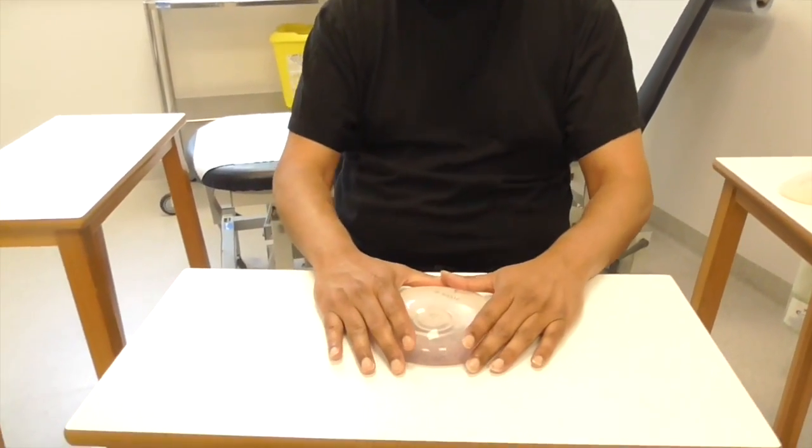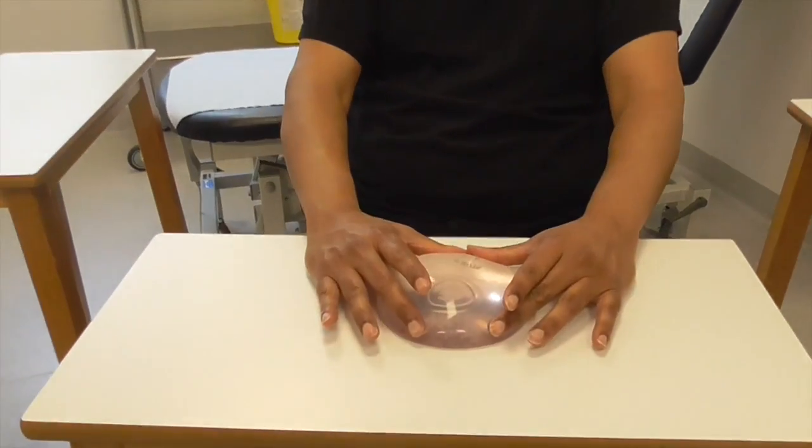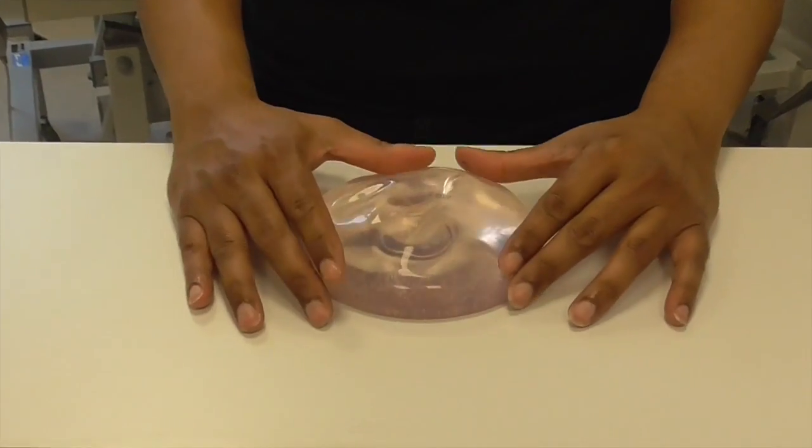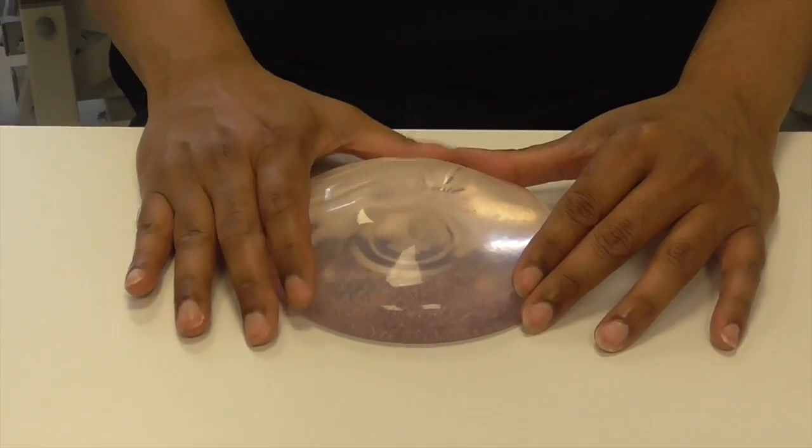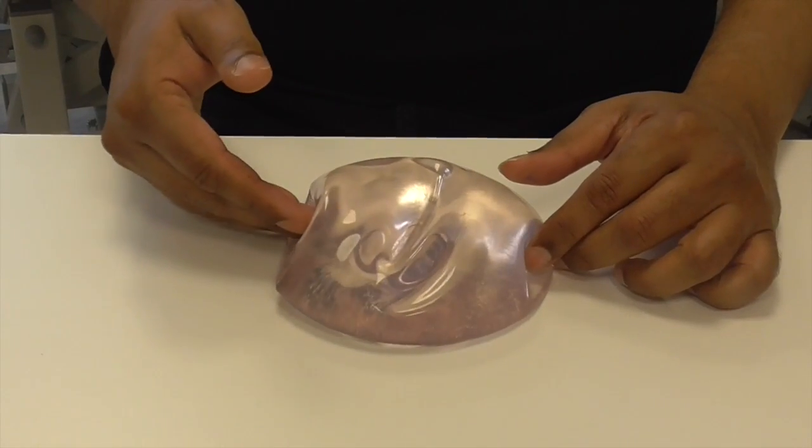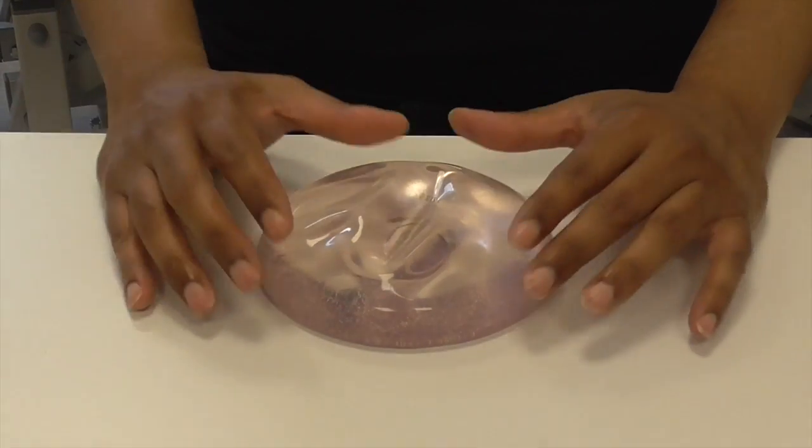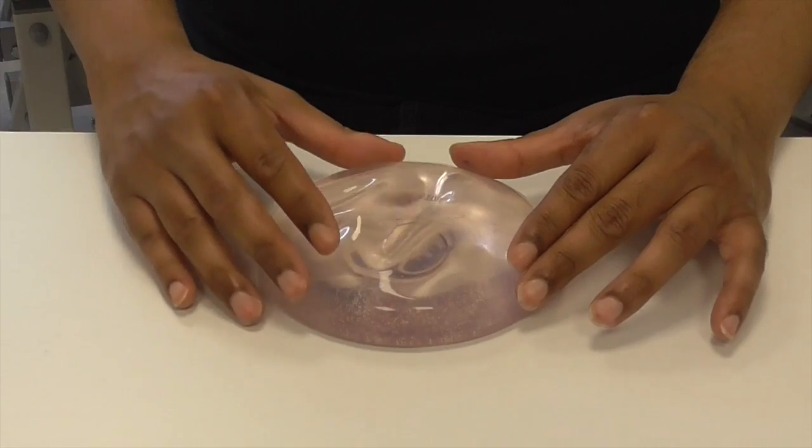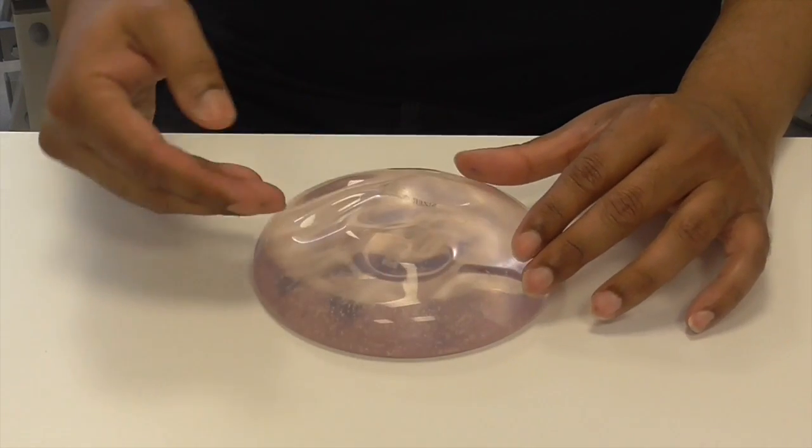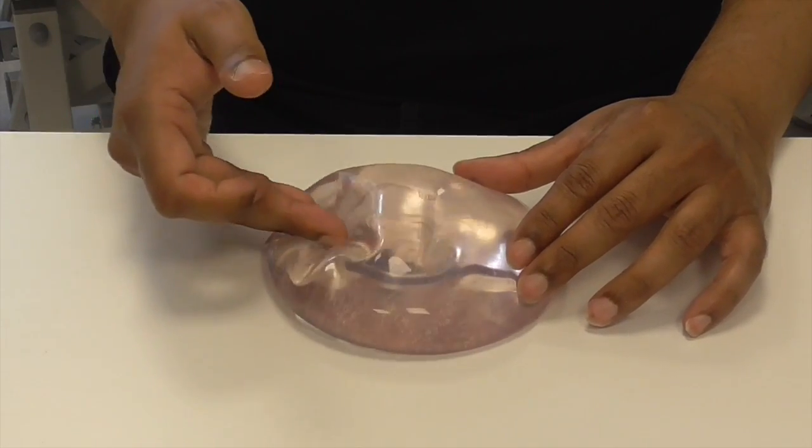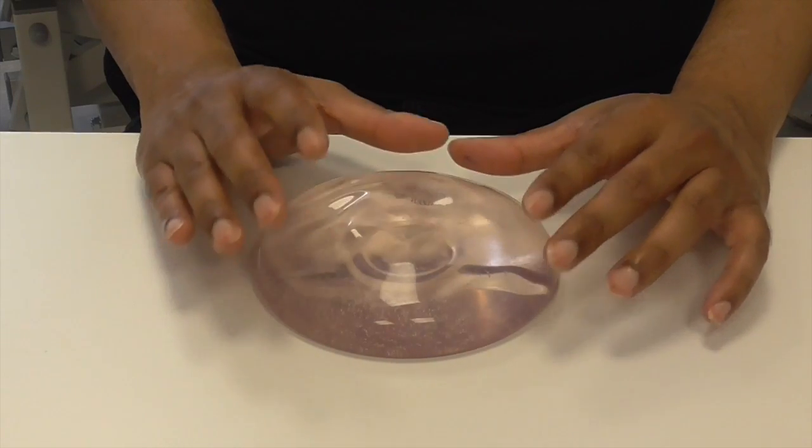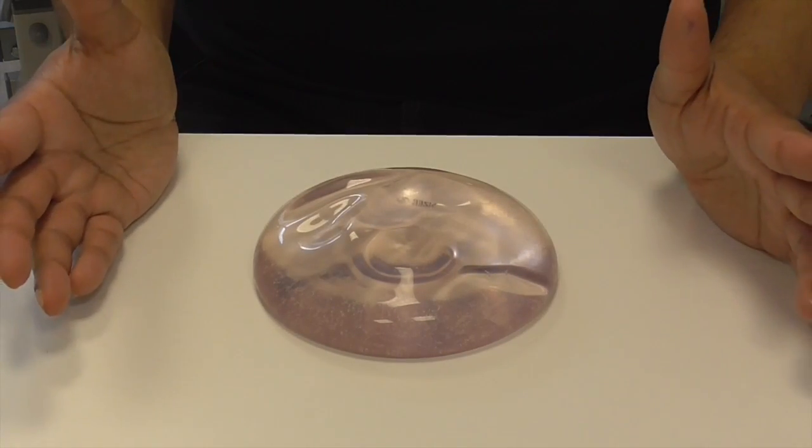If we look at the breast implants used in the United Kingdom, the vast majority, 90 plus percent, are a silicone shell with silicone gel on the inside. There are some ladies who have implants where the filling is not silicone but is made of soya bean oil, which they call trilucent implants.